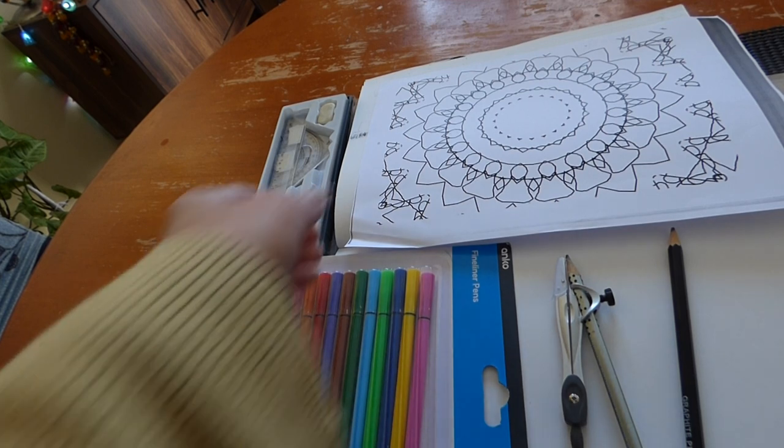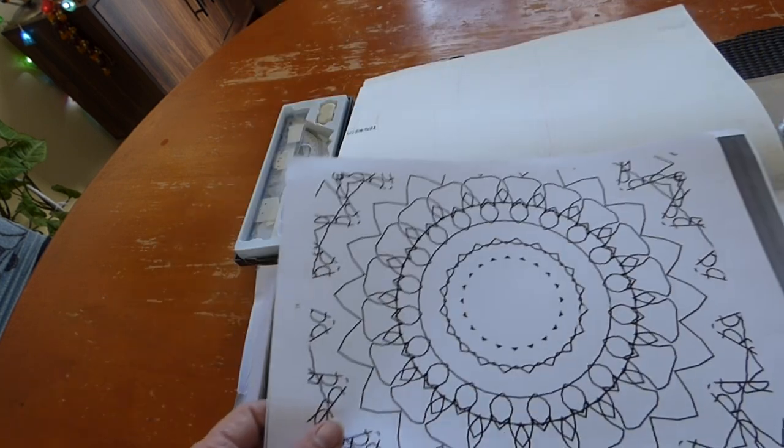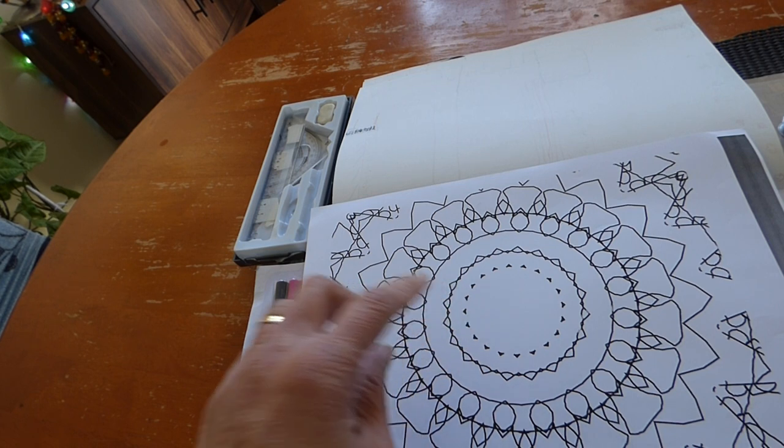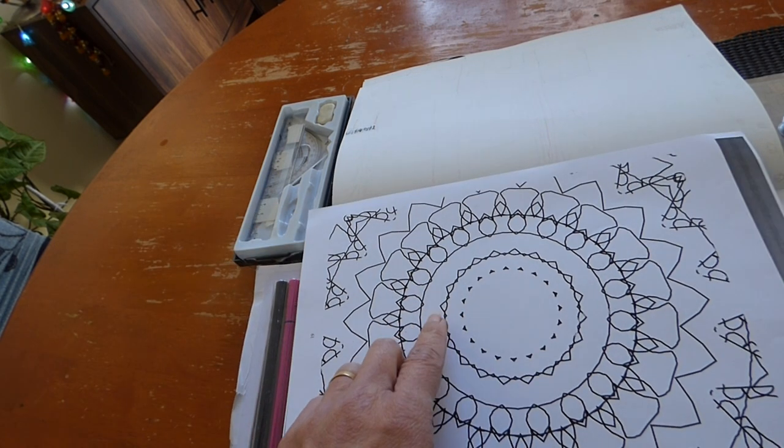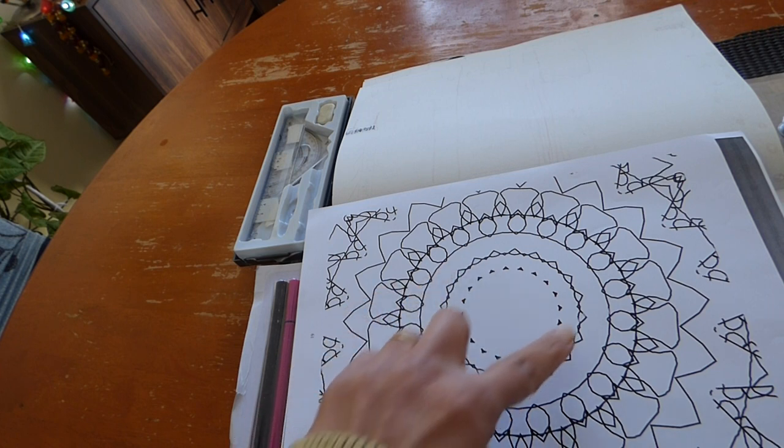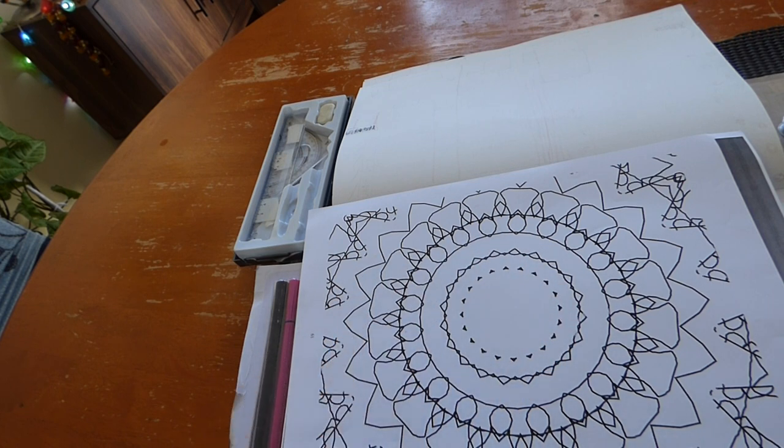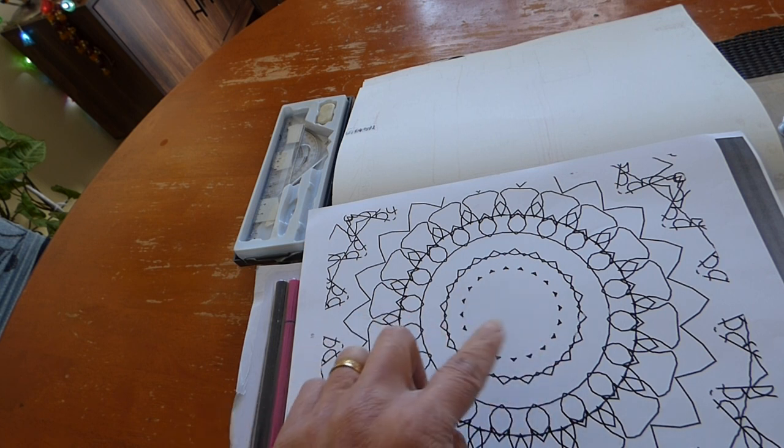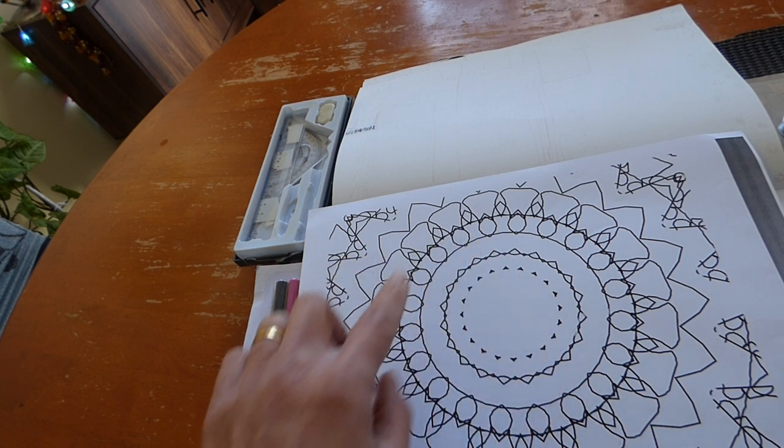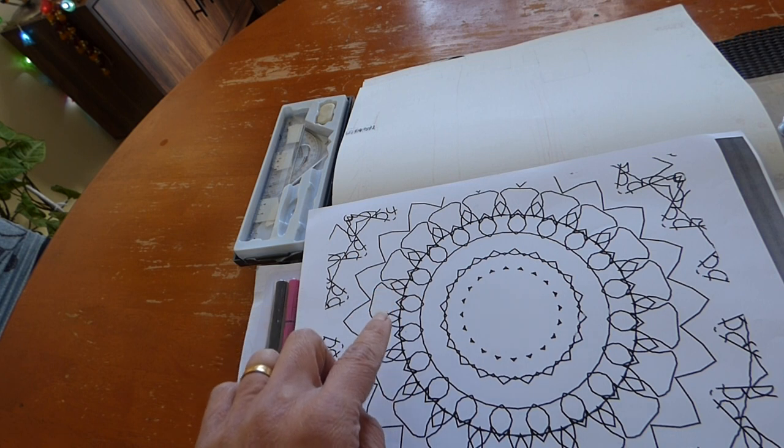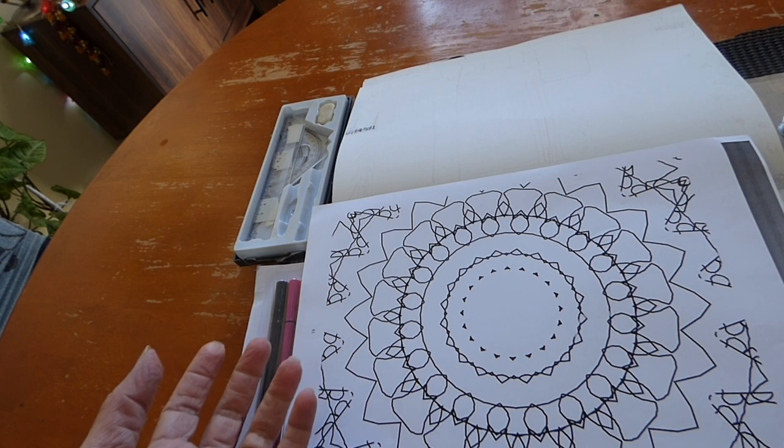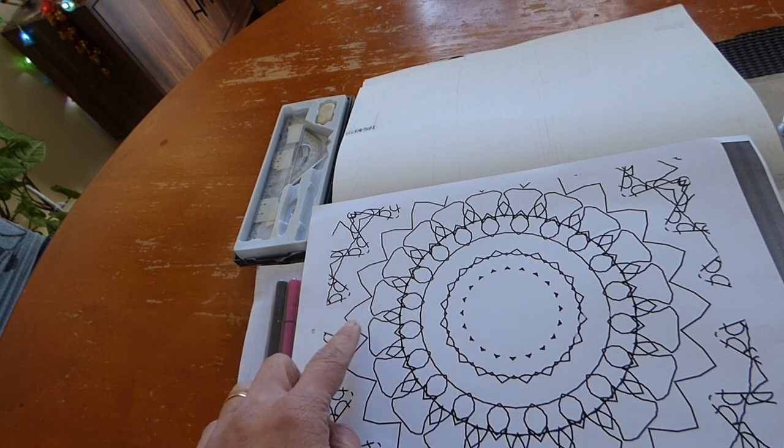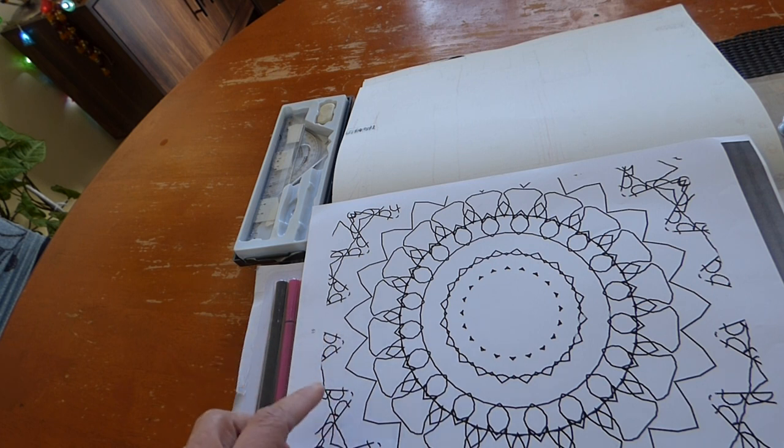And on this, we will have to choose either this circle and these petals and these leaves, or this circle and this petal to make a nice flower. And this particular leaf will be separate.